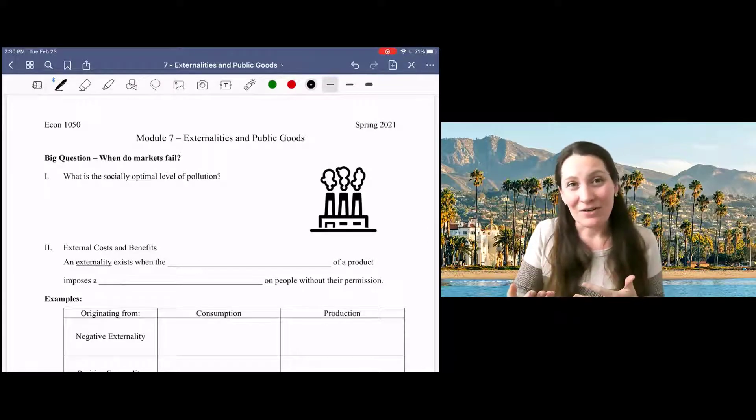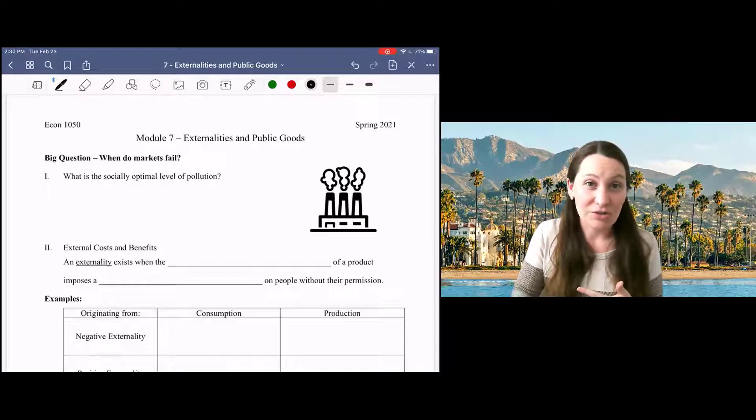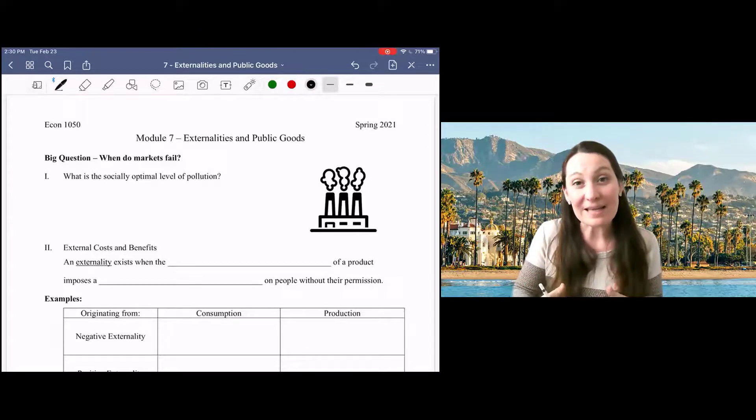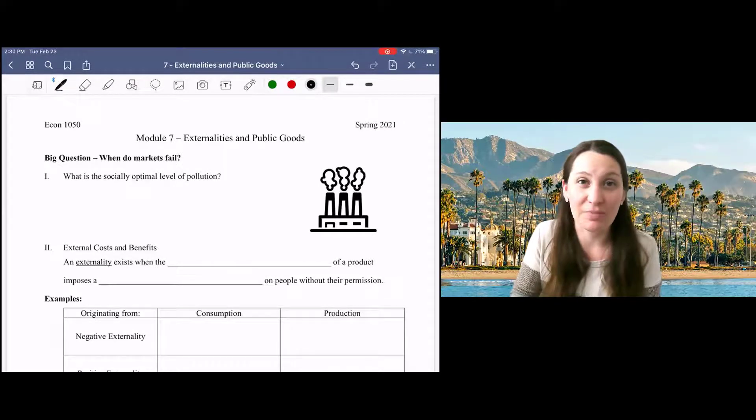However, we've made several assumptions in order to guarantee that that's true. We'll now begin to outline those assumptions and talk about situations in which markets fail to reach the socially optimal outcome.